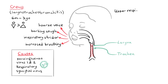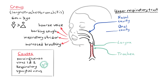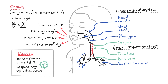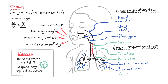The respiratory tract begins with the nasal cavity and the oral cavity. Oxygen inhaled travels through this area, the pharynx, the larynx, and then towards the lower respiratory tract. The lower respiratory tract begins with the trachea, which bifurcates into the bronchi, then smaller bronchi, then bronchioles, before terminating as an alveolus.